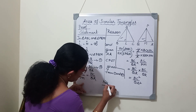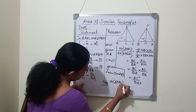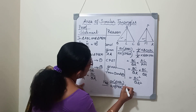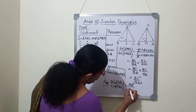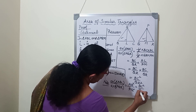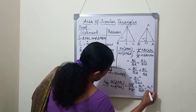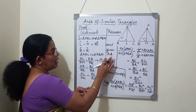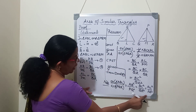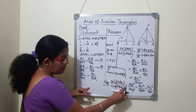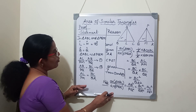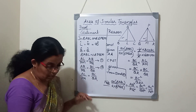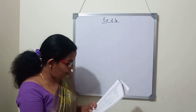Area of triangle ABC by area of triangle PQR equals BC square by QR square. We can also write this as AB square by PQ square, which equals BC square by QR square, which equals AC square by PR square. So the ratio of the areas equals the square of the ratio of their corresponding sides. When solving questions, remember we can take any one corresponding side, but we must write the square of the ratio. Now we will move on to exercise 2.4, first question.